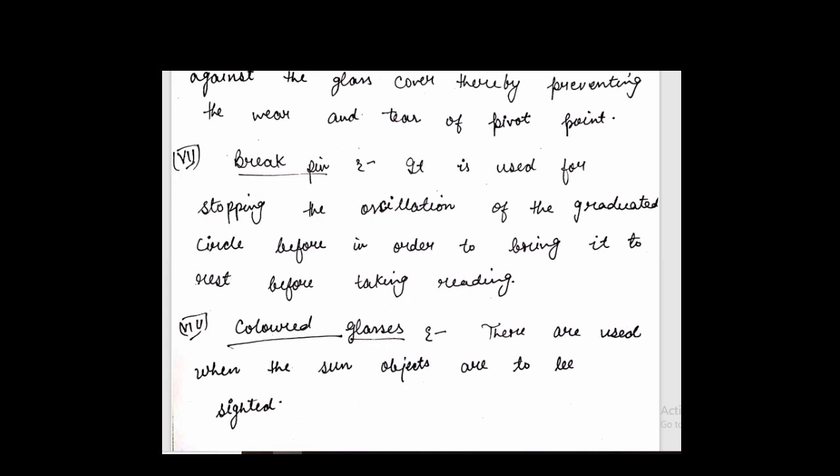Next is colored glass. Colored glass we use to protect from sun rays. So this is our introduction to prismatic compass. Thank you.